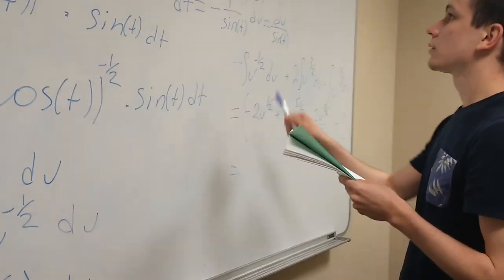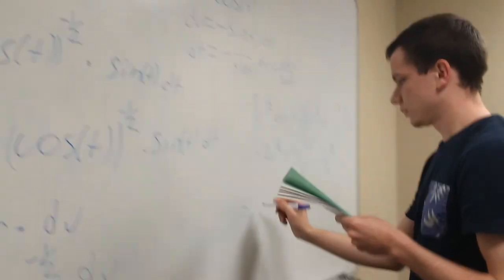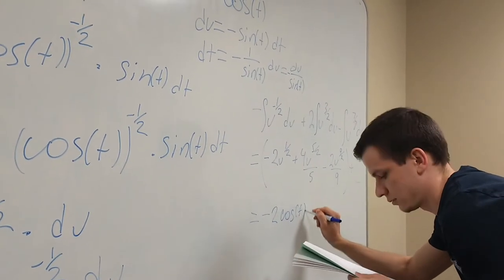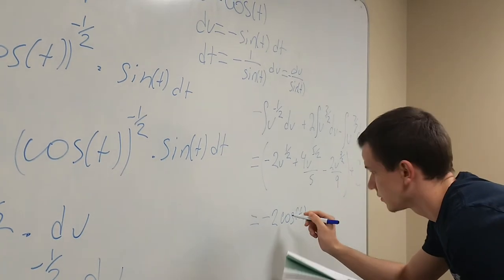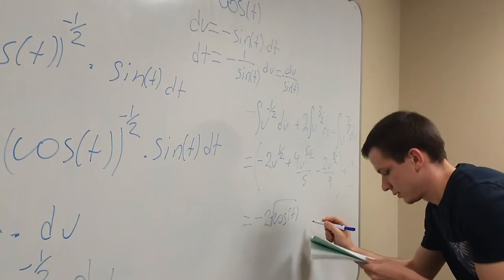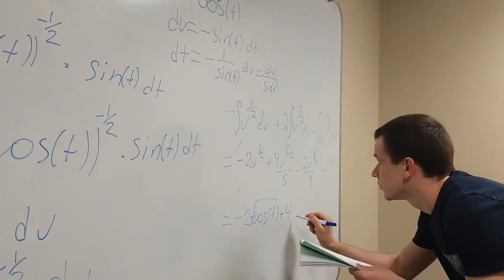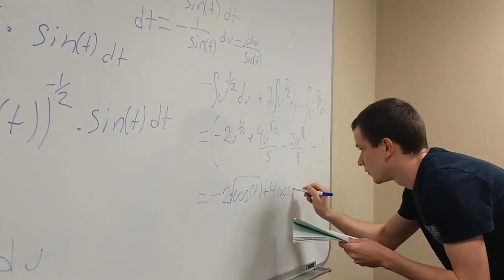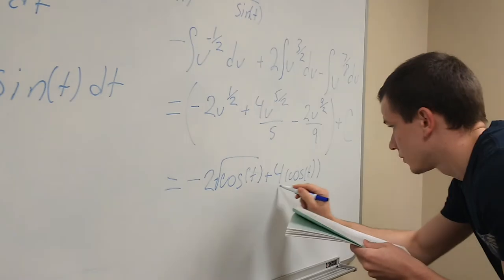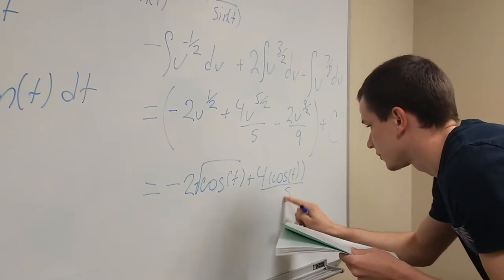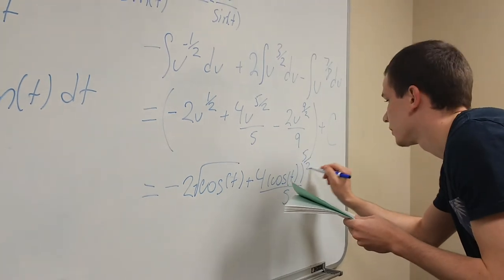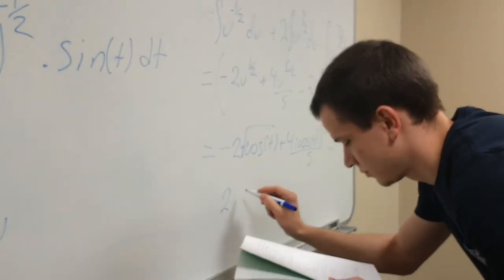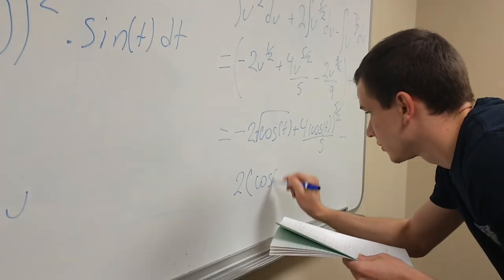So substitute in back cosine t for u would get us to negative two square root of cosine of t, plus four cosine of t to the five halves, minus two cosine of t to the nine halves.